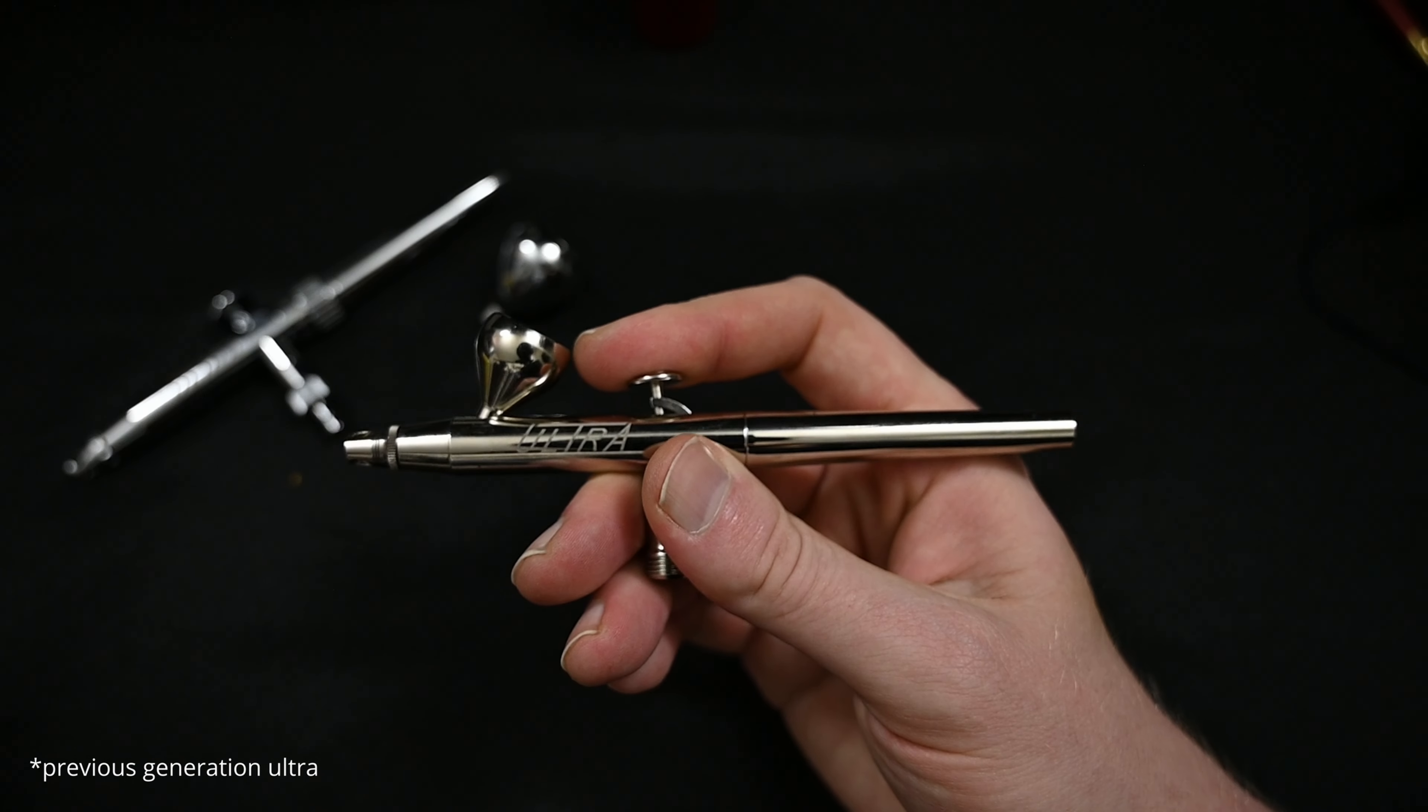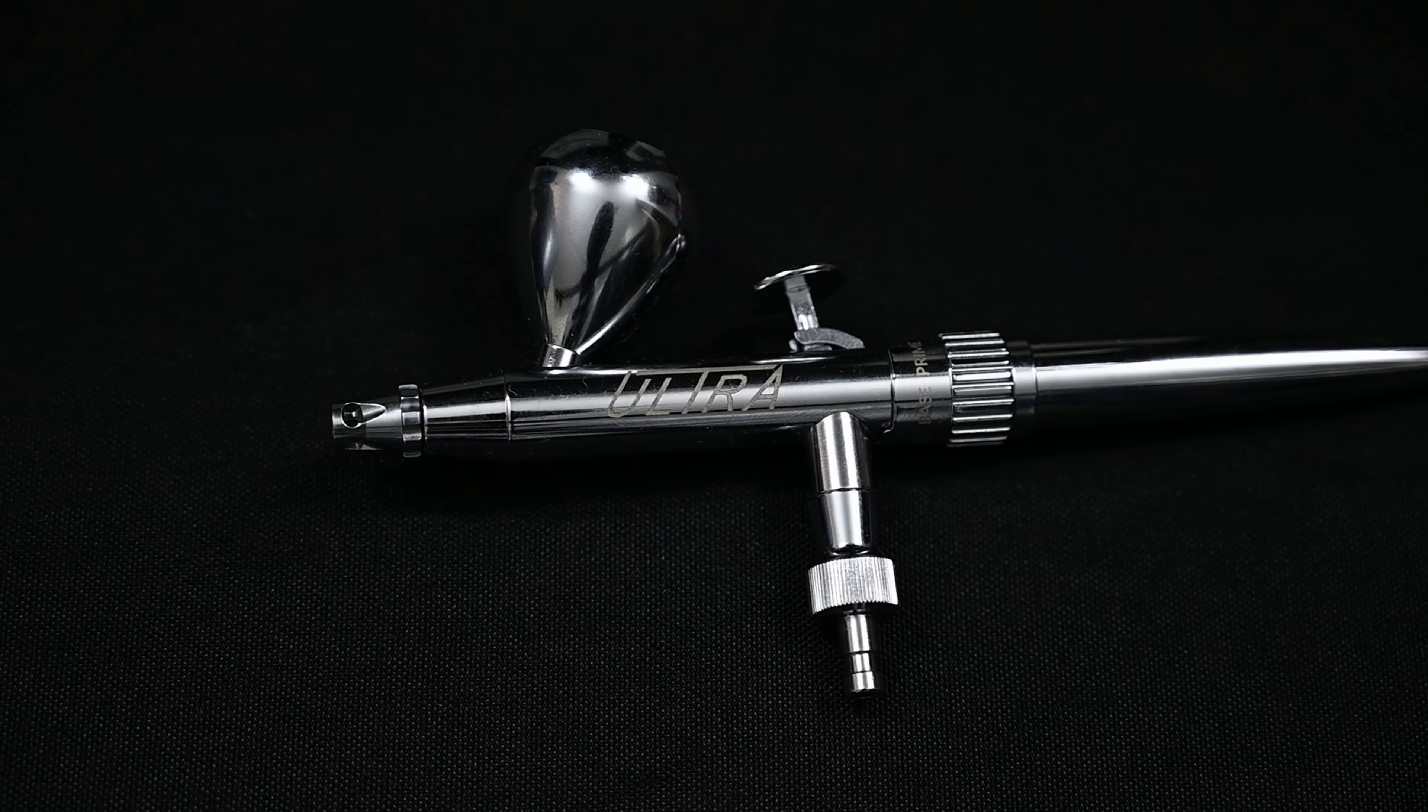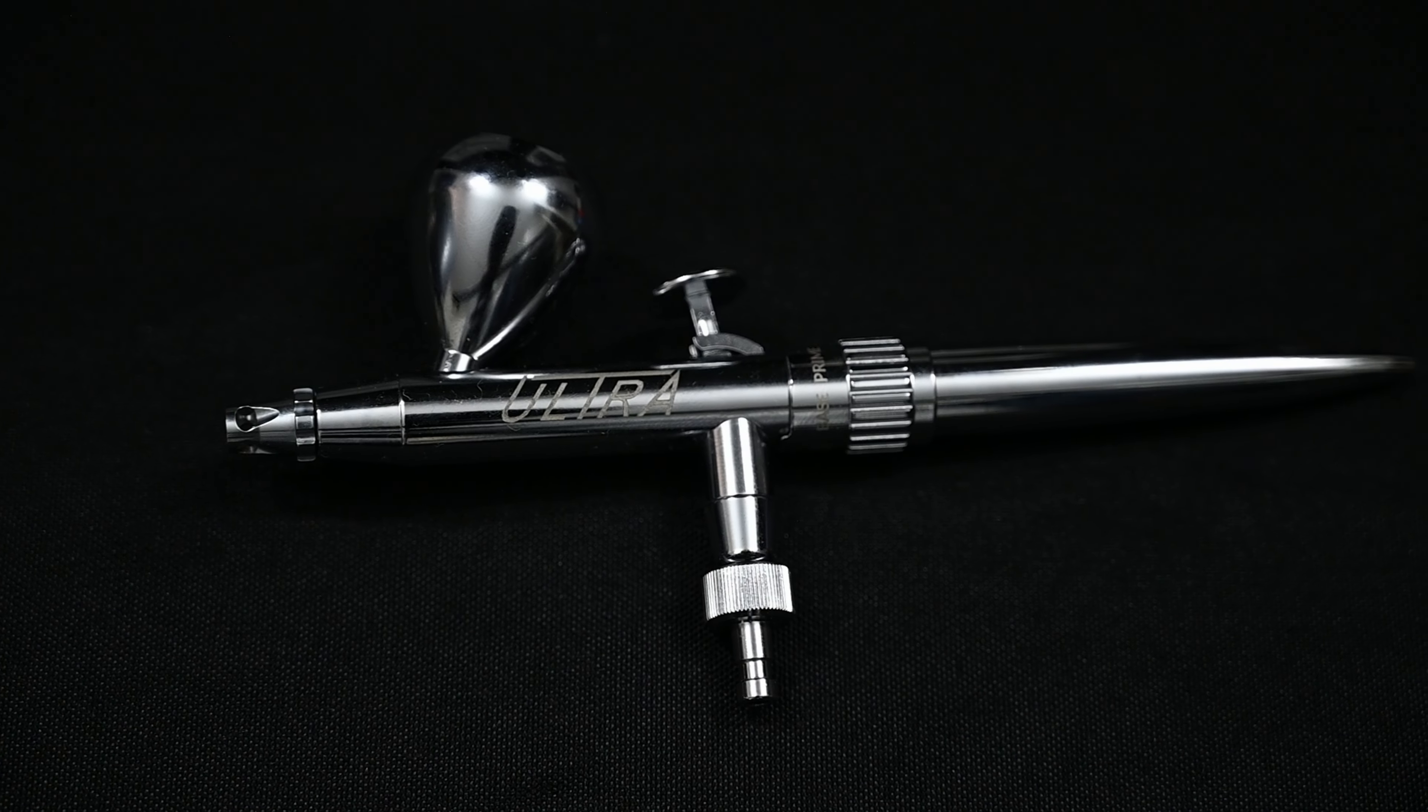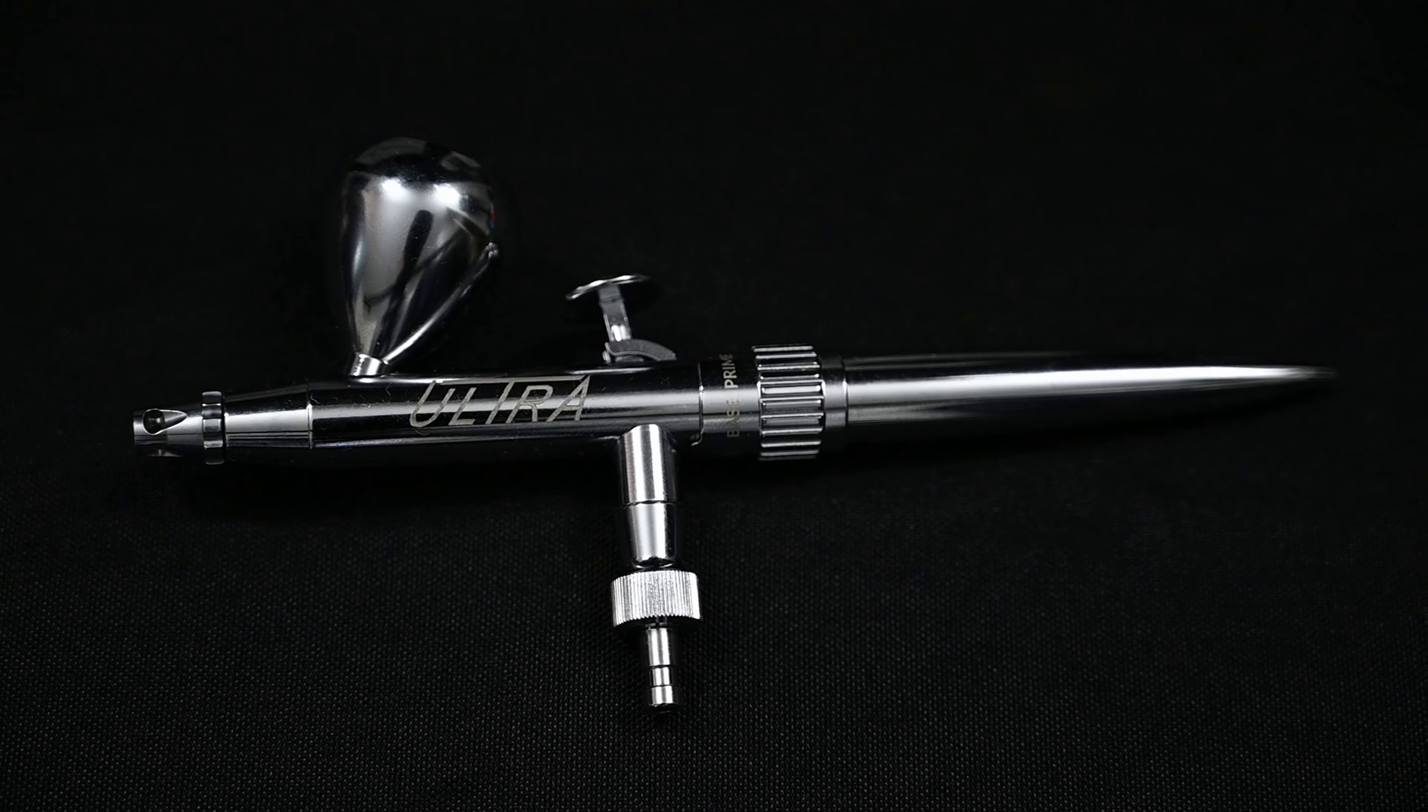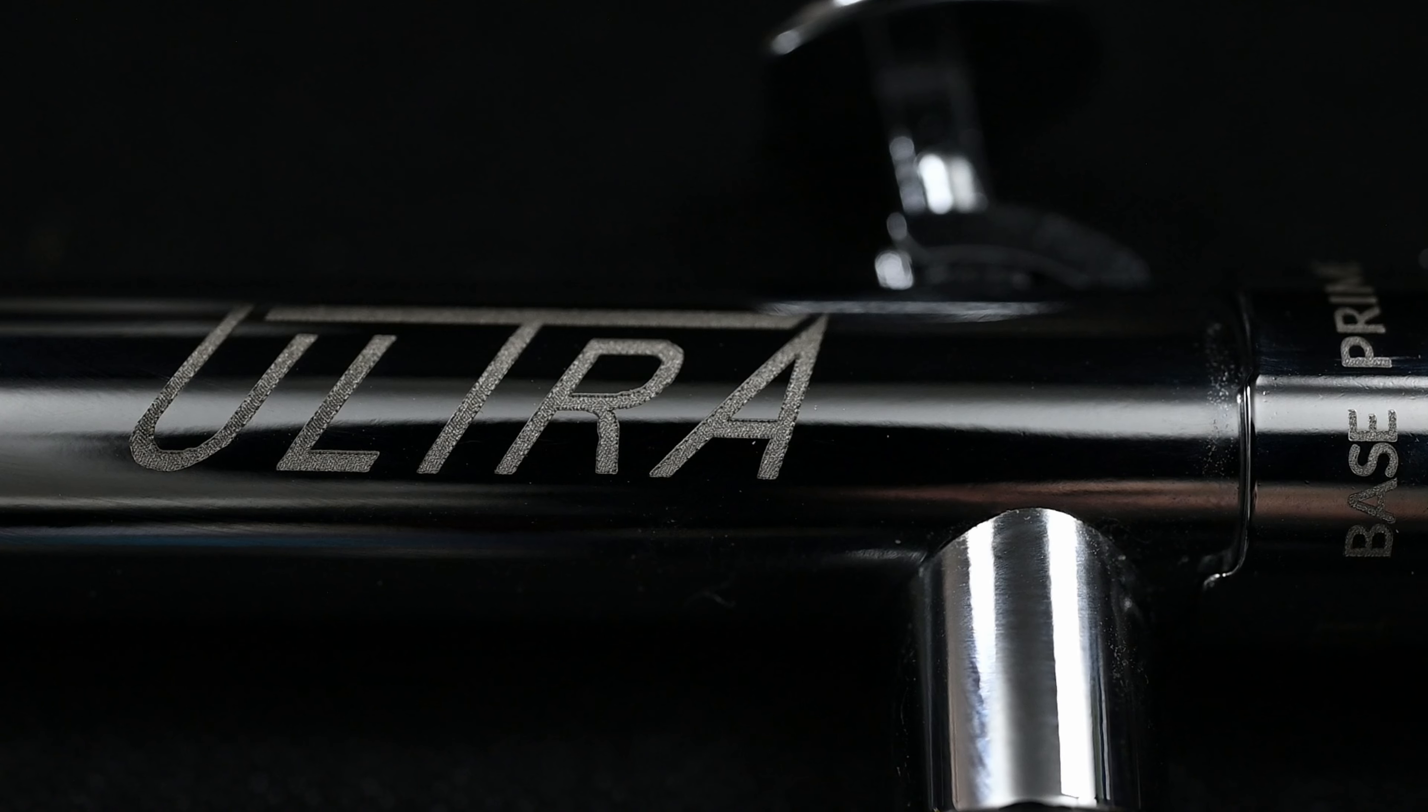Unlike the older Ultra model, which was nickel plated, this new one comes with a triple chrome coating. Chrome is just so strong, it's going to last a lifetime, and it's just nice to see as a standard on this airbrush. And underneath the macro lens, the finishing just speaks for itself.